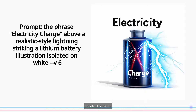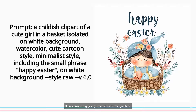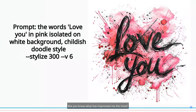Realistic illustrations. As I use it, I understand that this model is super smart and generates intelligent texts. According to the words in your phrase, it selects the typography and even the illustration. If I'm considering giving prominence to the graphics, my approach will be to first focus on the subject, its medium and styles. Only after that I'll add the text. I might even experiment with style raw for some truly peculiar and unique results. But what has impressed me the most? The typography itself.